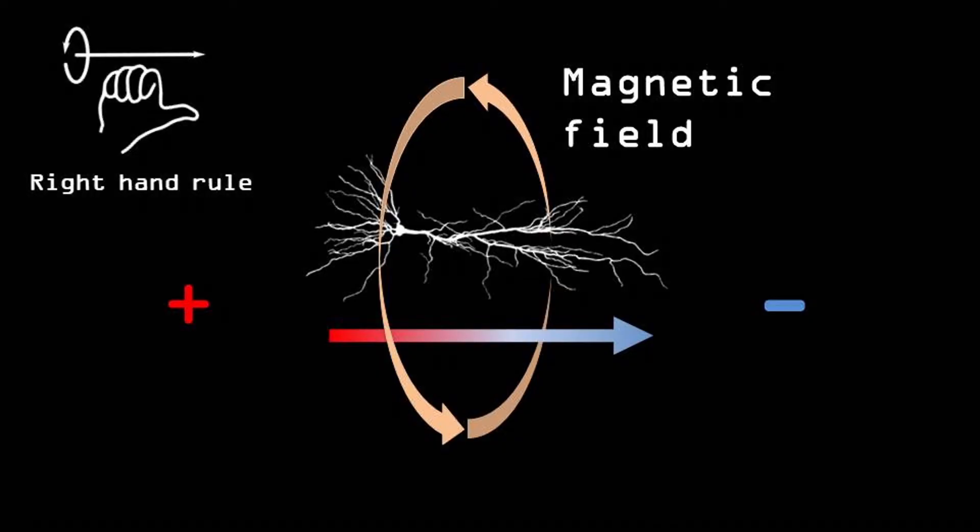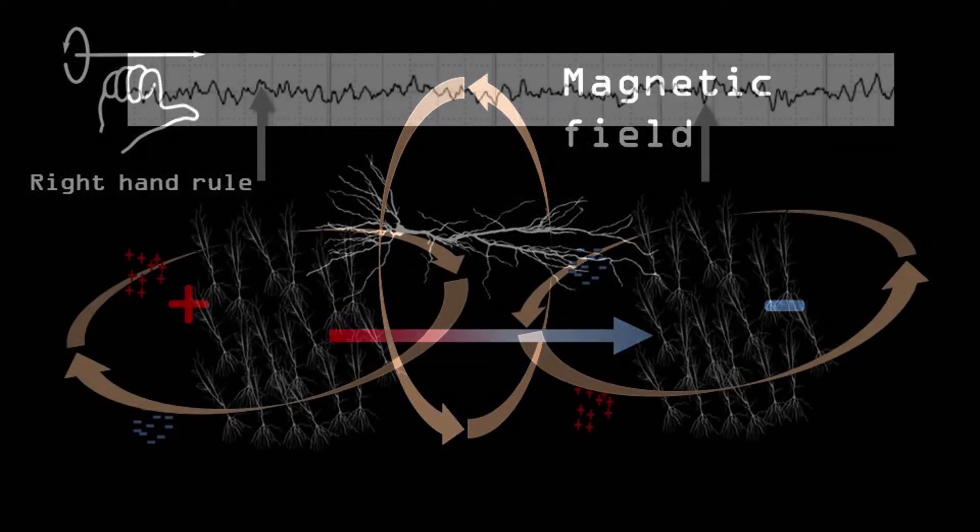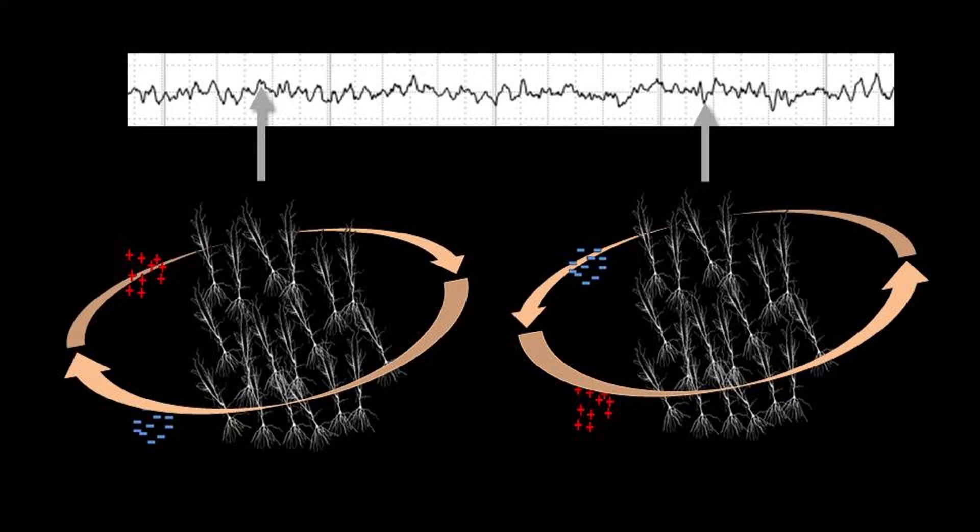Just as electrical signals induced by a group of neurons can be detected with EEG sensors, the magnetic signals that are simultaneously induced by the same group of neurons can also be picked up, but in this case we use MEG sensors.